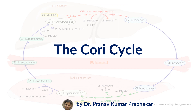The Cori cycle is also known as the lactic acid cycle. We have different metabolic pathways in our body. One of the basic and simplest is glycolysis, which occurs under both aerobic and anaerobic conditions. The end product of glycolysis differs: in the presence of oxygen, the end product is pyruvic acid; when oxygen is deficient or under hypoxic conditions, the end product is lactic acid.